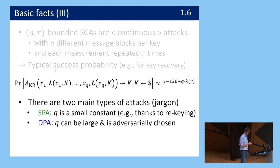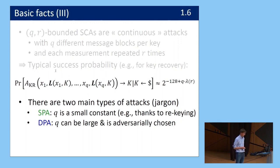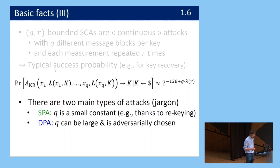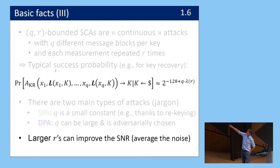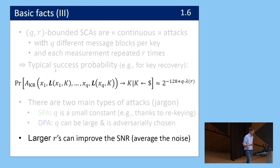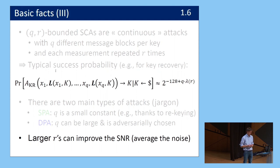In the side-channel literature you'll see two terms frequently: SPA (simple power analysis), where Q is a small constant and the adversary does reeking; and DPA (differential power analysis), where Q can be large and is chosen by the adversary. The number of exploitable bits lambda also depends on R, the number of repetitions, because in a physical setting there is physical noise and repeating measurements can improve the SNR.